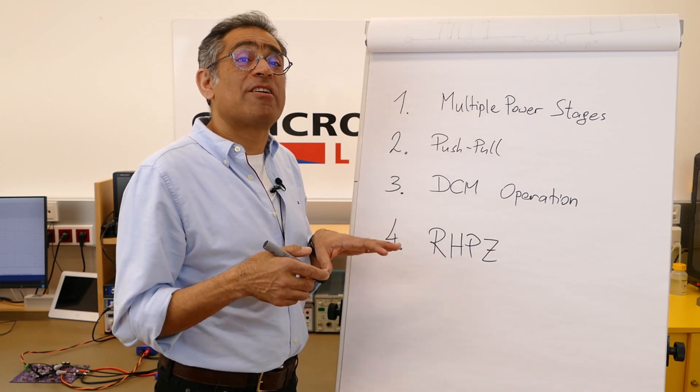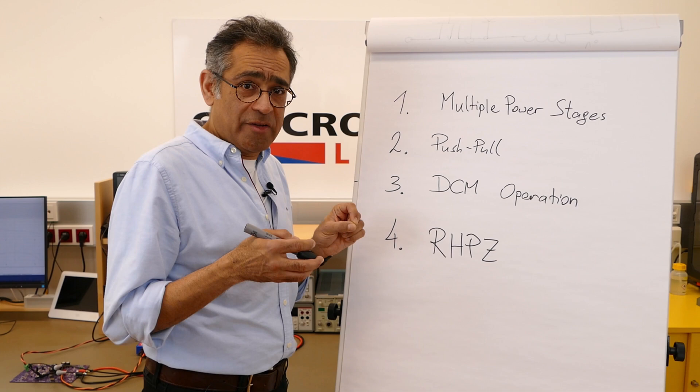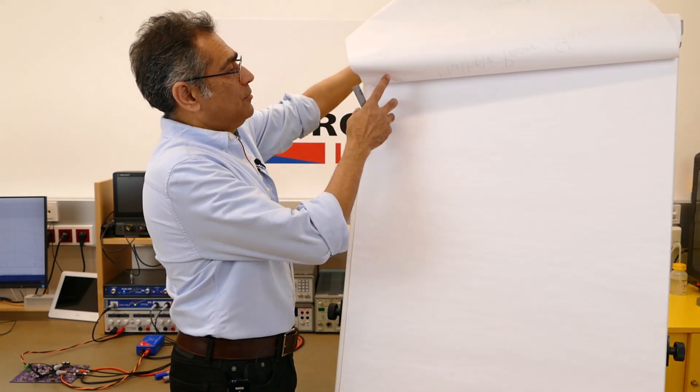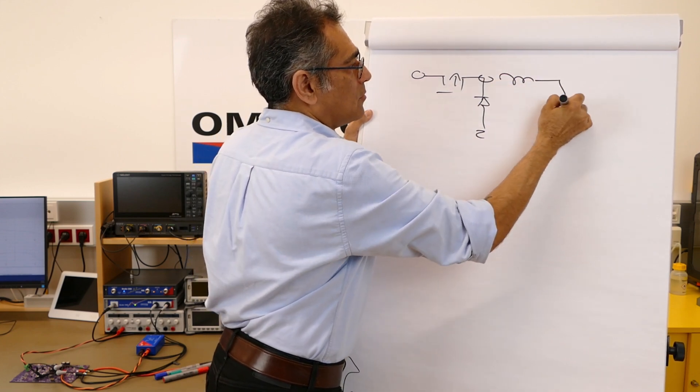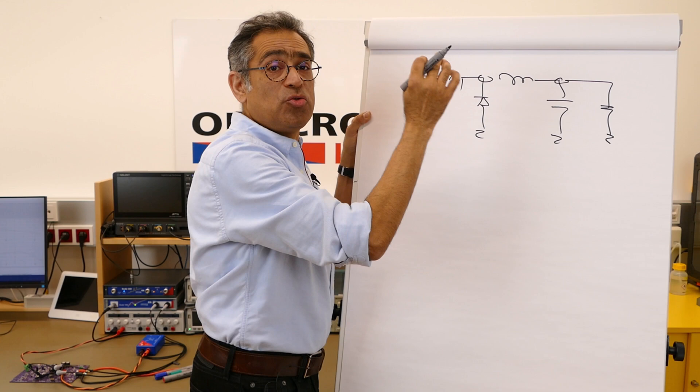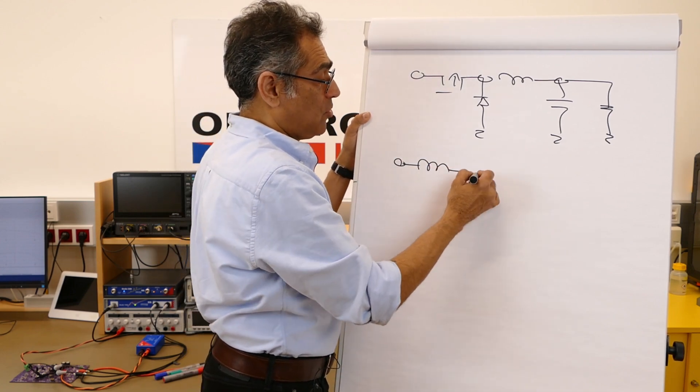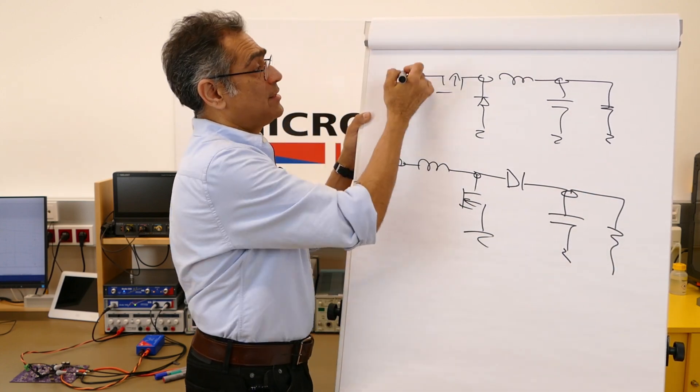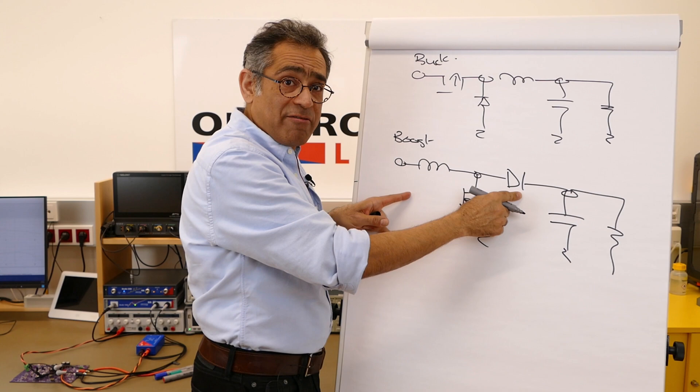Finally, and most importantly, for all converters that have right hand plane zeros, you really don't have a choice, you have to use current mode. Now we have covered right hand plane zeros in a different video, but for now it's very easy to say which converters have a right hand plane zero and which converters do not. So if you look at a converter, all you have to do is look at your topology. If the diode is located before the inductor, then you do not have a right hand plane zero, and therefore voltage mode may be an option for you. If on the other hand your diode is located after your inductor—like this is a buck, this is a boost—if the diode is located after the inductor, then you do have a right hand plane zero and you really don't have a choice, you have to use current mode.